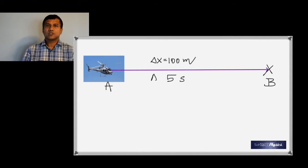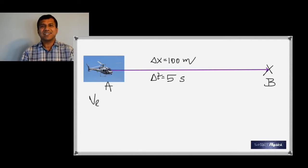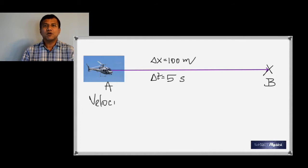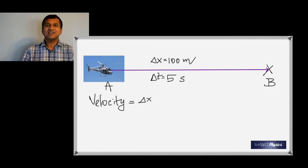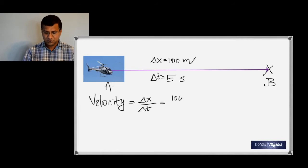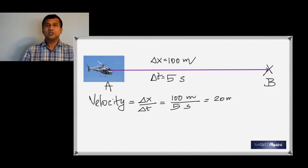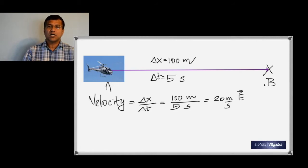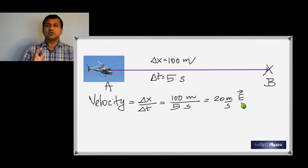Delta X is both the distance and displacement, and the time taken is five seconds. Velocity is defined as displacement over time, so it's Delta X divided by Delta T — 100 meters divided by five seconds — giving 20 meters per second. Since velocity is a vector quantity, you must specify the direction, which is to the east. So velocity is 20 meters per second to the east.